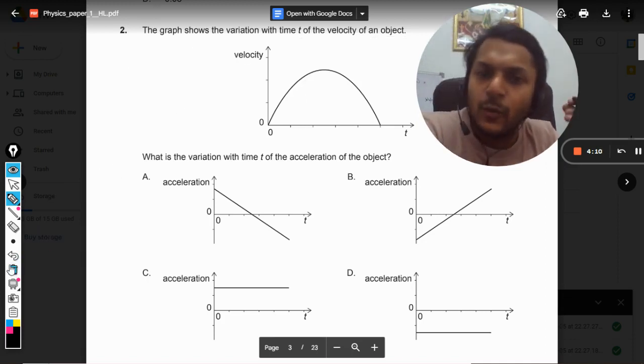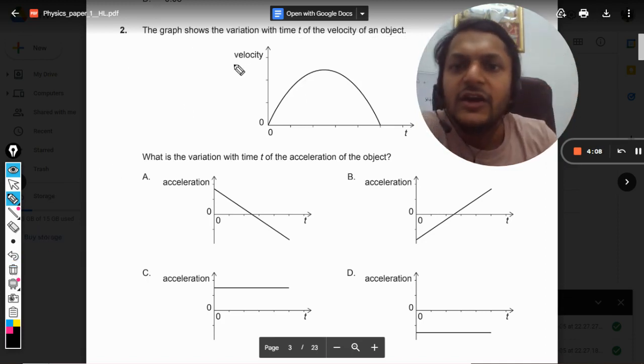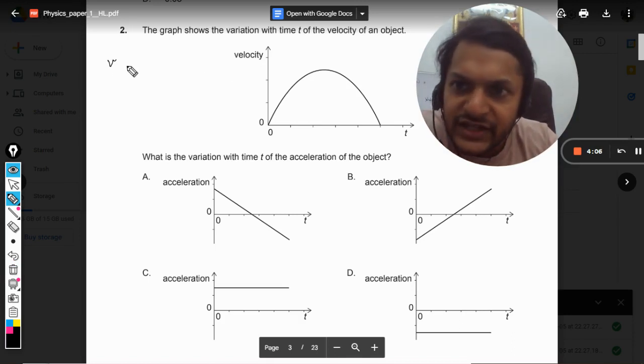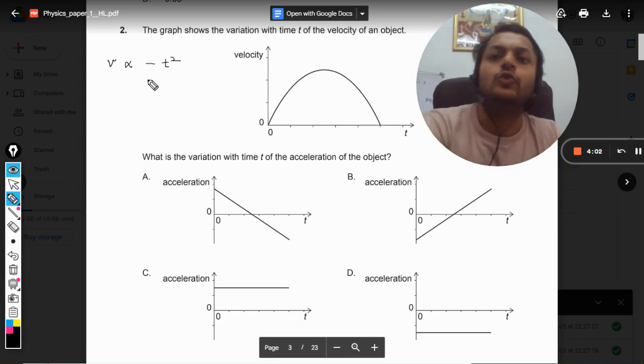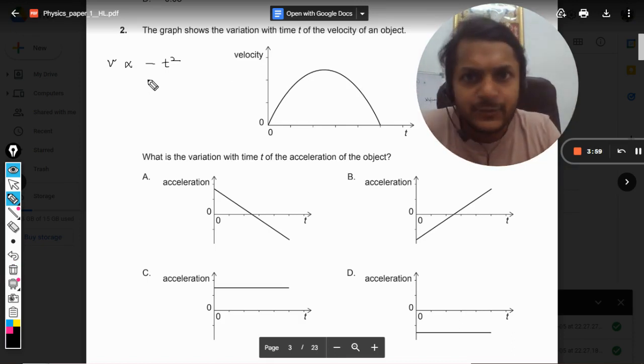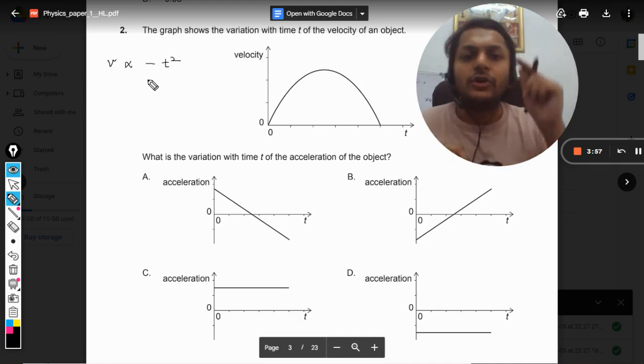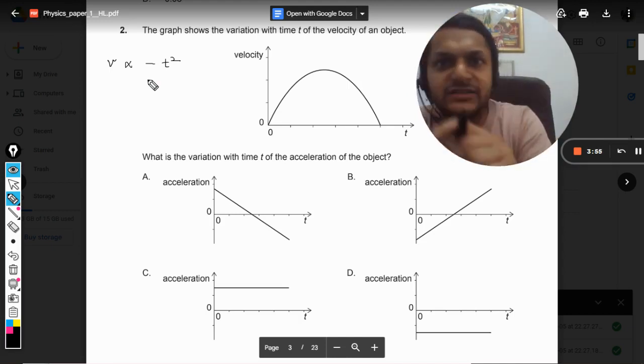So now this belongs to the negative parabola, so in just one second we can jump to this conclusion that the variation will be velocity is directly proportional to -t² as per the graphs are concerned, because on the x-axis it is t and on the y-axis it is v.